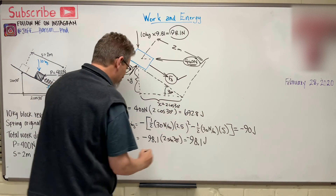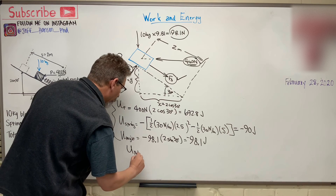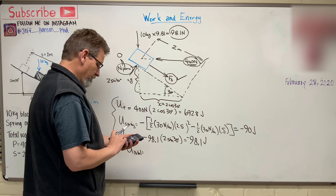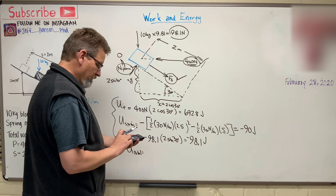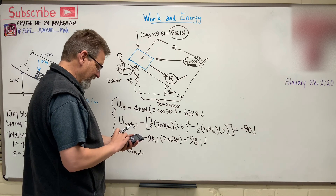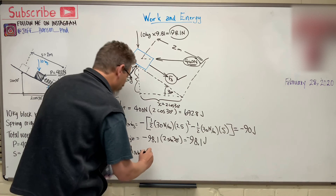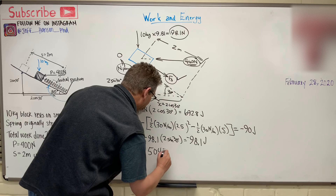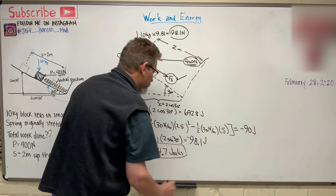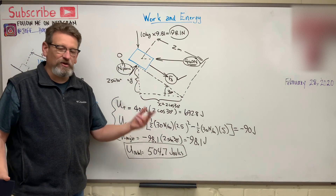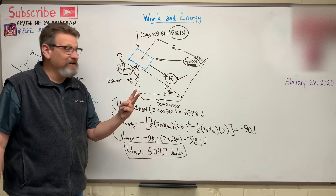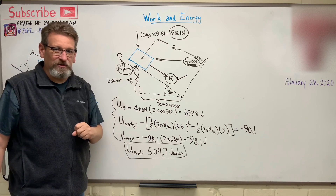To find the total work done, we just add these together. U_total = 692.8 − 90 − 98.1 = 504.7 joules. And there is the total work done on the system. That's not too bad. Remember those rules for how work is done, remember the sign, and you're going to be okay. Come back next time and we'll talk more about the energy equations.